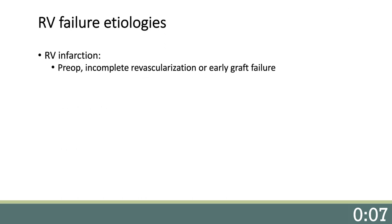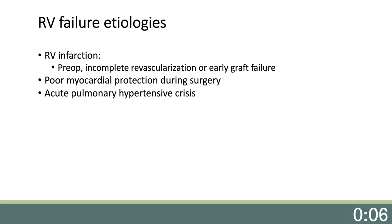RV infarction is an important cause of RV failure, either preoperatively, from incomplete revascularization, or early graft failure after surgery. RV failure can also be caused intraoperatively by poor myocardial protection during surgery. In the setting of preexisting pulmonary hypertension or elevated PVR, patients can develop acute pulmonary hypertensive crisis and lose cardiac output. Postoperative pulmonary embolism is sudden and may necessitate mechanical circulatory support if thrombolysis is contraindicated after surgery.